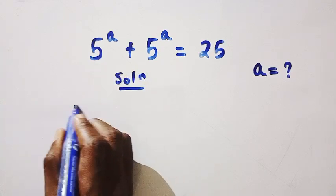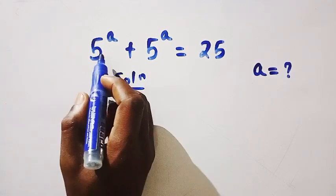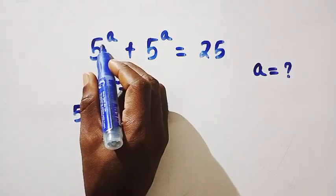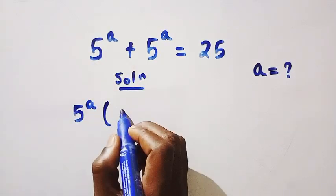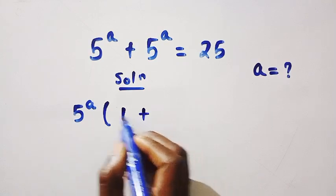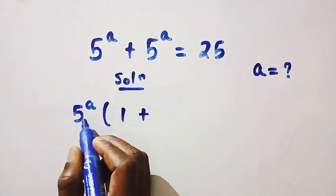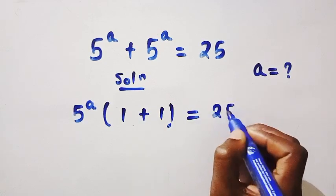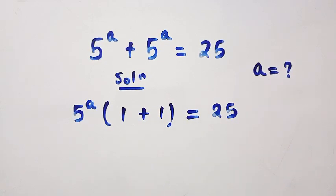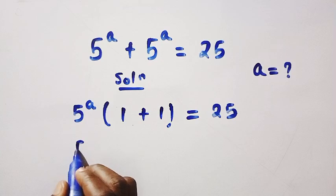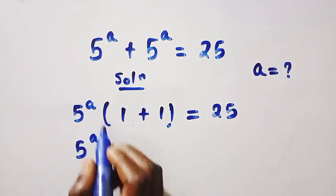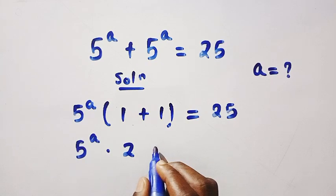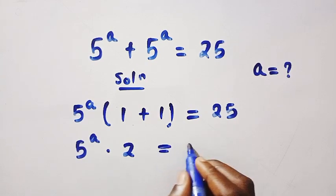So we have 5 power of a. If I factor out 5 power a, let's divide this 5 power a by 5 power a. We have 1 plus also 5 power a divided by 5 power a, this is also 1, equals 25. So then we have 5 power of a multiplied by 1 plus 1, that is 2, equals 25.